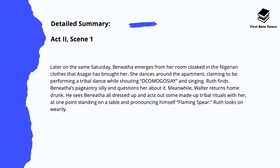In Act 2, Scene 1, later on the same day, Benita emerges from her room cloaked in Nigerian attire that Asagai has bought for her. She dances around the apartment claiming to be performing a tribal dance and she shouts and sings. Ruth finds Benita's pageantry silly and questions her about it. Meanwhile, Walter returns home drunk. He sees Benita all dressed up and acts out some made-up tribal rituals with her, at one point standing on a table and pronouncing himself 'flaming spear,' while Ruth looks on warily. Both Benita and Walter are playing on what some could call very racist African stereotypes in this scene.